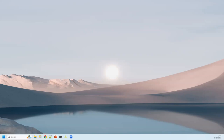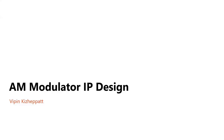In this next video series we will be designing a variety of IPs for communication purposes. We will start with an AM modulator, specifically amplitude modulation with double sideband with full carrier. Later we will also be designing AM single sideband modulators, FM modulators, BPSK, and QPSK — different kinds of modulators.